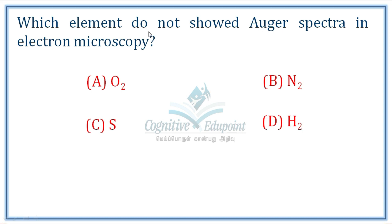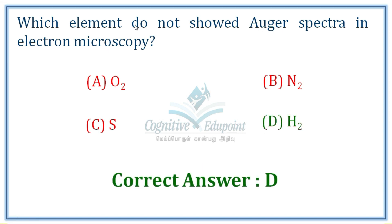Next question: Which element does not show Auger spectra in electron microscopy? Auger spectroscopy cannot study the two lightest elements — hydrogen and helium. The lightest element that can be studied by Auger spectra is lithium. Hydrogen atom does not show Auger spectra in electron microscopy. It is a surface technique.